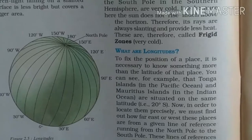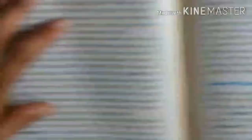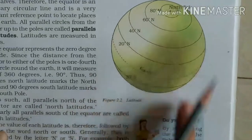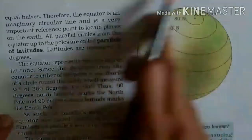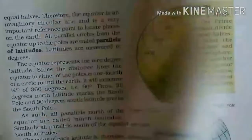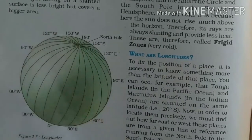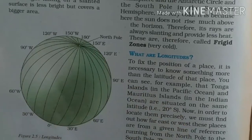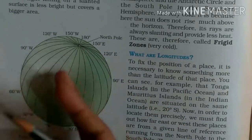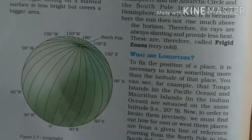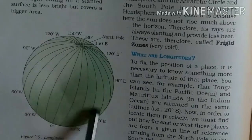Latitude is like this - a circle of latitude, horizontally, one way. But the longitude is vertical. Longitude is like this: 0 degree, 30, 60, 90, 120, 150, 180. This is the North Pole and this is the South Pole. These are the longitudes - vertical lines. We call these meridians - meridians of longitude.